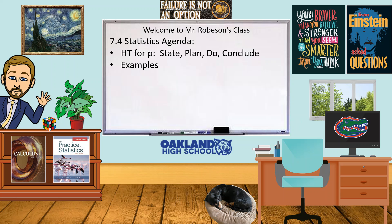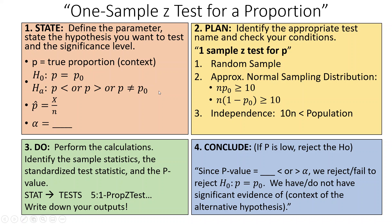Hi guys, it's Mr. Robeson here. We are working on section 7.4 today: hypothesis test for proportions. We're putting it all together, doing the State, Plan, Do, Conclude process to do a full hypothesis test for a proportion. I'm going to look at two examples here today.